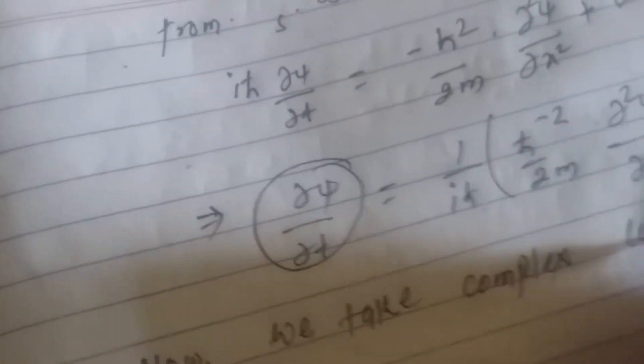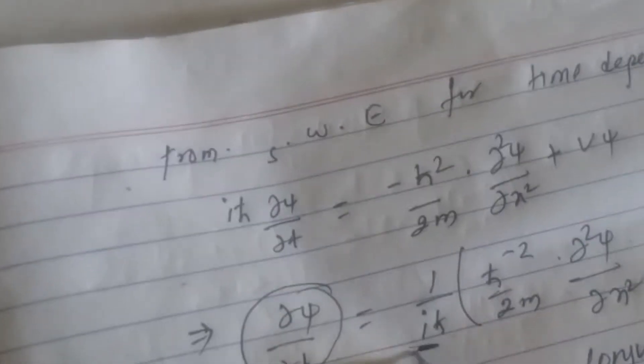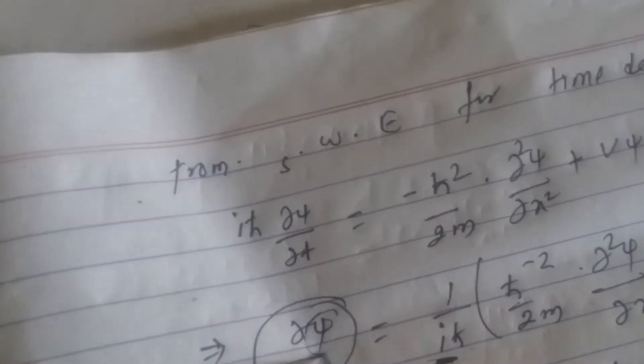Taking the complex conjugate of equation star, the i becomes negative and psi becomes psi-asterisk. Therefore del psi-asterisk/del t equals 1/(iℏ) times negative [minus ℏ-squared over 2m times del-squared psi-asterisk over del x-squared plus V psi-asterisk]. This is equation double-star.